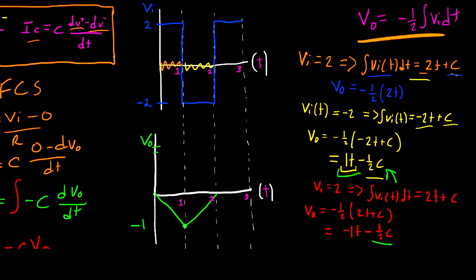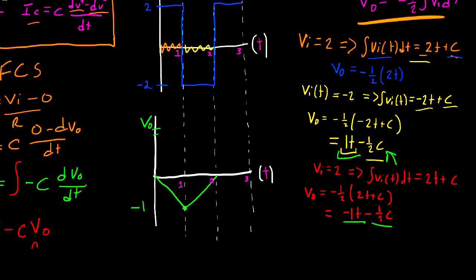And again, I'm not going to worry about this negative 1 over 2C. Instead, I'm going to focus on the slope of the graph and connect it to where it left off. And that's going to connect right here and end at negative 1 when T is equal to 3. And this graph is the final answer to the problem.